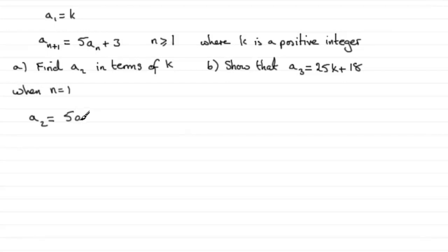So we just write that down: 5a₁ plus 3. But what is a₁? Well, we're told that the first term in the sequence is k, so it's going to be 5k plus 3. So therefore, a₂, the second term in the sequence in terms of k, is 5k plus 3. And that question was worth 1 mark.